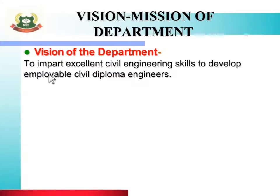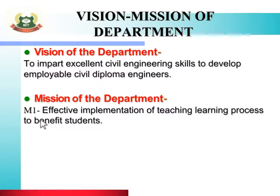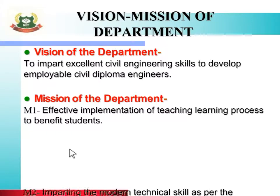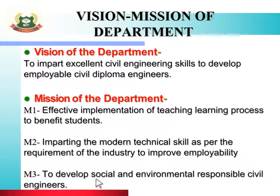Let us see vision and mission of the department. Vision of the department: to impart excellent civil engineering skills to develop employable civil diploma engineers. Mission of the department — there are three missions. Mission one: effective implementation of teaching learning process to benefit students. Mission two: imparting modern technical skills as per industry requirements to improve employability. Mission three: to develop socially and environmentally responsible civil engineers.